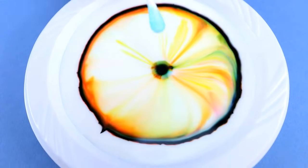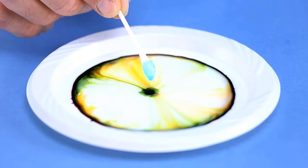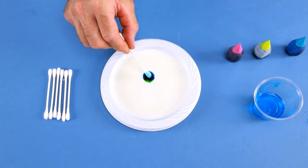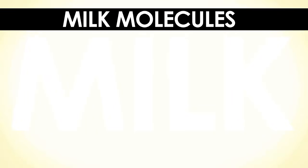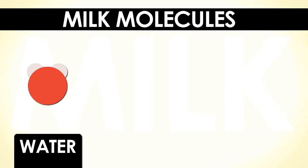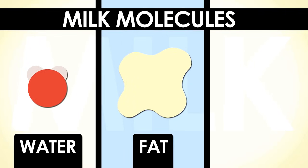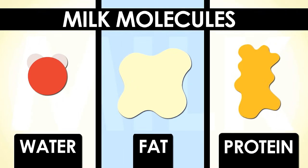To understand what's going on here, it's pretty tricky actually, but if you looked way down into the milk, as close as you could get, all the way to the molecules that the milk is made out of, you'd see that it's made out of water molecules and fat molecules and protein molecules.